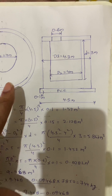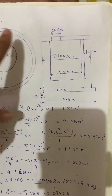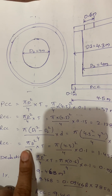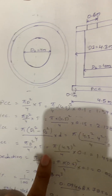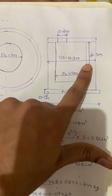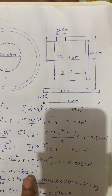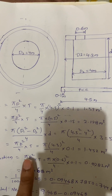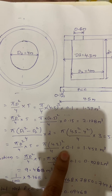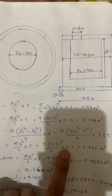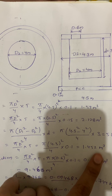Next, concrete quantity for the slab. Same formula: π D² / 4 × thickness. The outer diameter of the entire slab portion is 4.3 meters, so π × (4.3)² / 4 × 0.1 meters slab thickness. I got 1.452 meter cube.